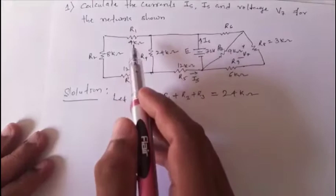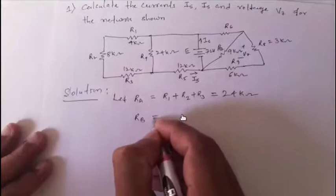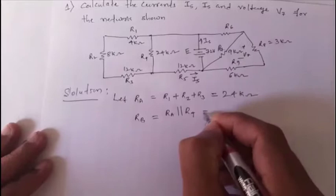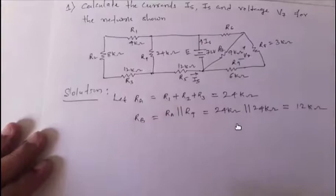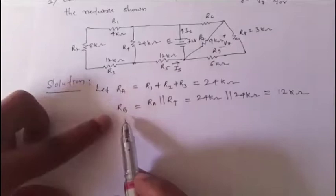When r1, r2, r3 are replaced by ra, that resistance is in parallel with r4. So let rb = ra parallel with r4. Since ra = 24 kΩ and r4 = 24 kΩ — two equal resistors in parallel — the equivalent is half, which is 12 kΩ.